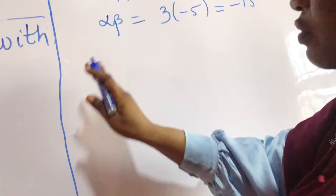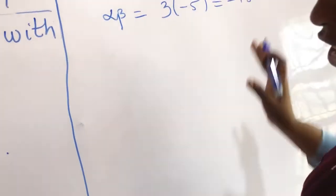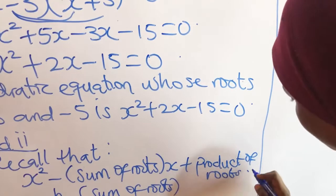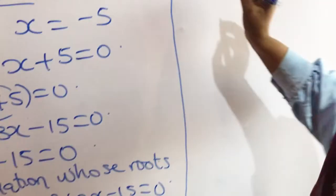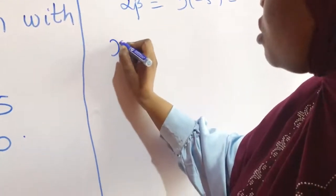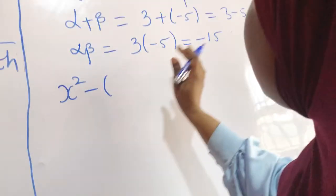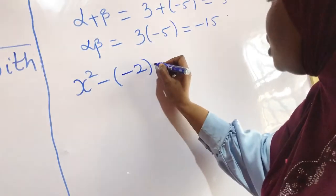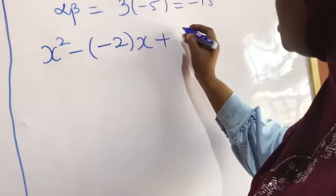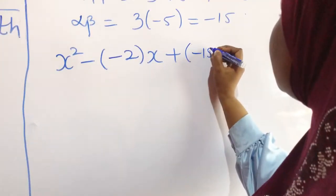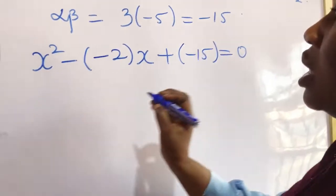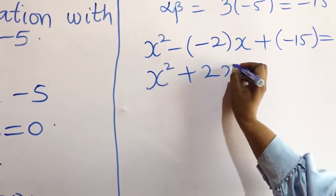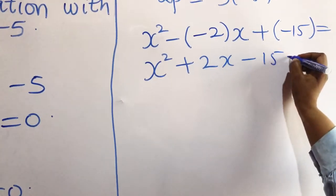The next thing is to substitute all these into equation 1. That means we have x squared minus (sum of roots). The sum of roots is minus 2, multiplied by x, plus (product of roots) equal to minus 15, and everything is equal to 0. So here x squared plus 2x minus 15 is equal to 0.